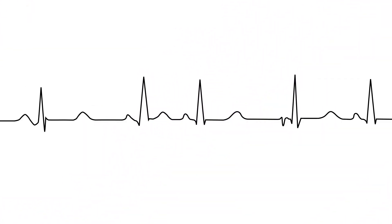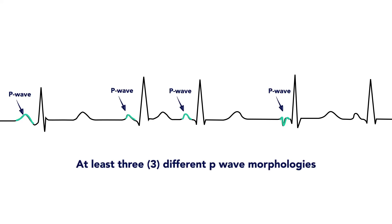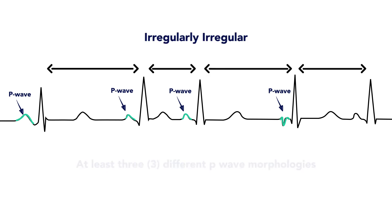This is one of the defining characteristics of a wandering atrial pacemaker on an EKG. Specifically, you should see at least three distinctly different P wave morphologies. And because you have multiple ectopic foci generating action potentials, you may see that people with a wandering atrial pacemaker rhythm will have an irregularly irregular rhythm.